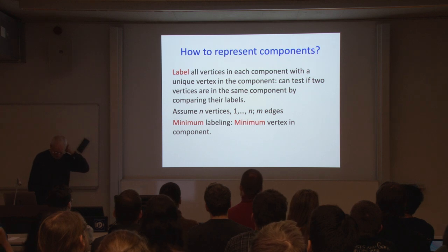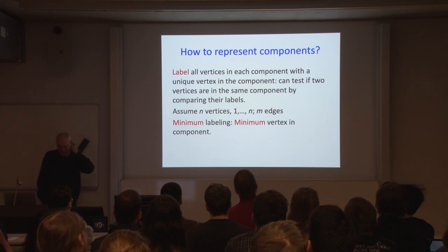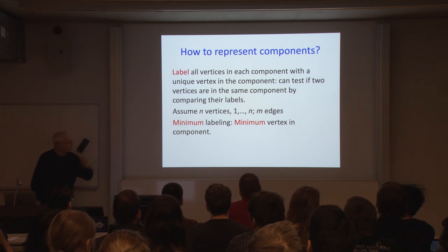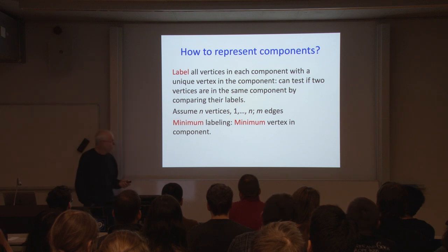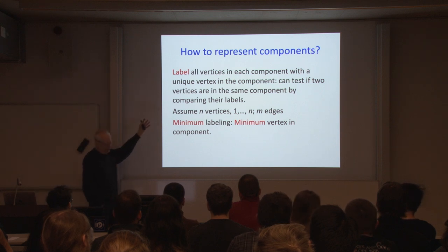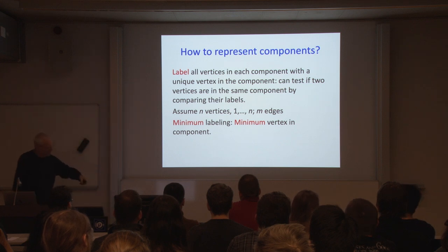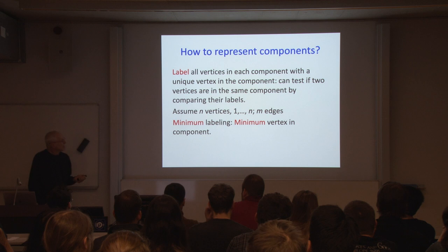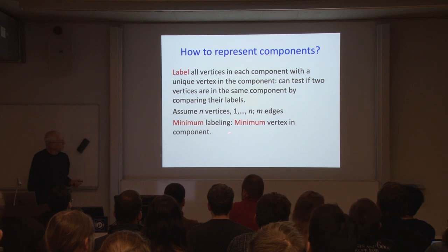If we want to compute the components, we need a way to represent them. One way: label all vertices in each component with a distinguishing vertex — a unique vertex in that component. Then we can test if two vertices are in the same component by comparing their labels. We'll assume n vertices numbered one through n and m edges, which lets us define a special minimum labeling: pick the minimum vertex in each component as its name.